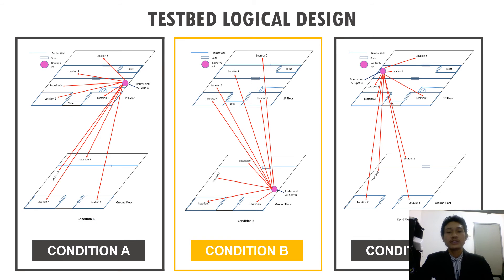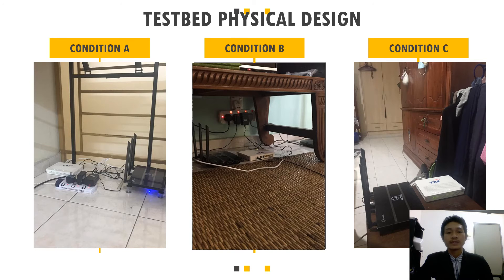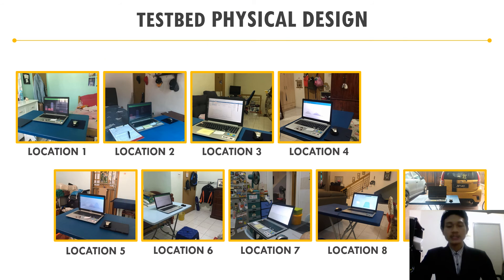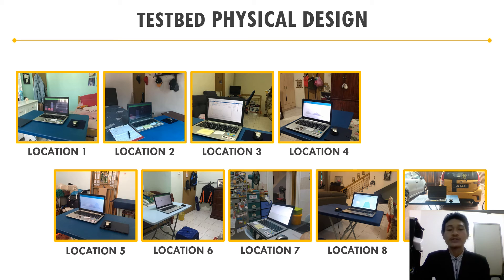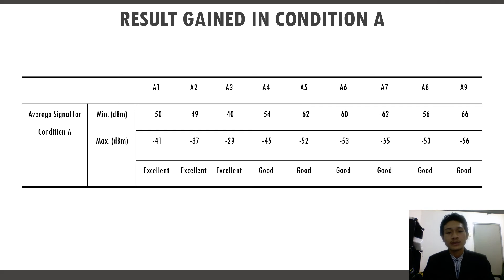The logical design shows Condition A, Condition B, and Condition C: Condition A is on the first floor, Condition B is on the ground floor, and Condition C is on the first floor. The physical design layout shows 9 user testing locations — 4 on the ground floor and 5 on the first floor.